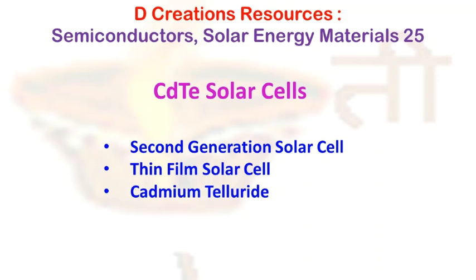Comparing CdTe with other thin film solar panels, such as amorphous silicon solar panels, the efficiency of CdTe solar panels is higher. But at the same time, amorphous silicon panels are cheaper, and if you are concerned about toxicity, they are also less toxic compared to CdTe. So there are both advantages and disadvantages.